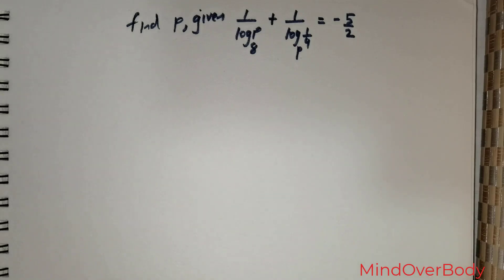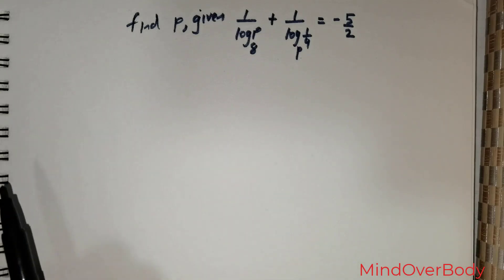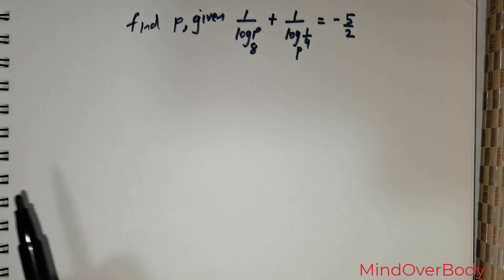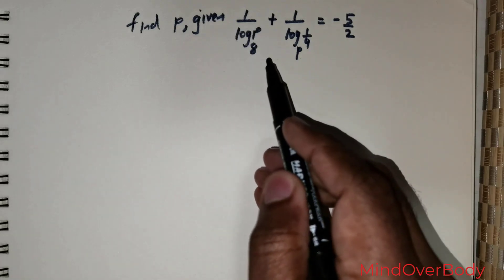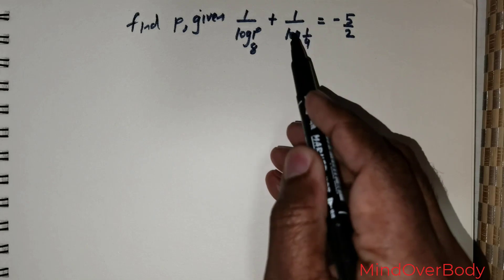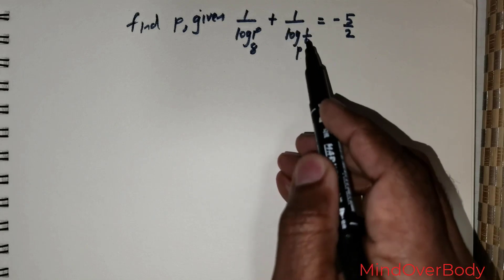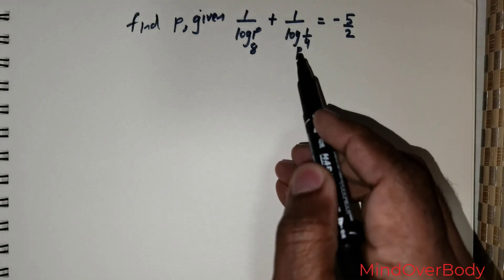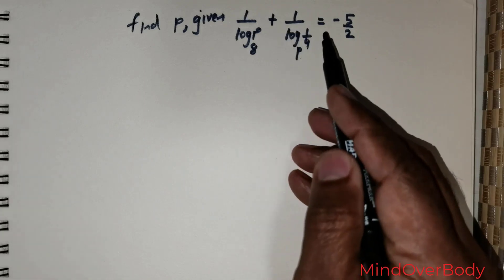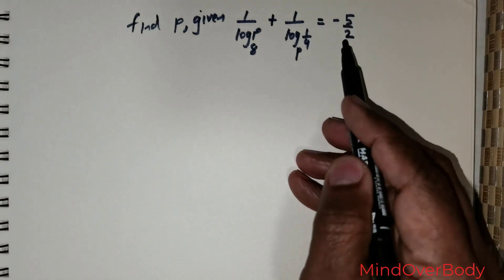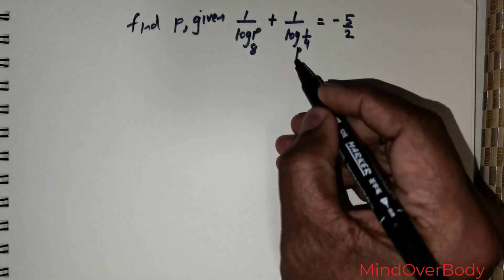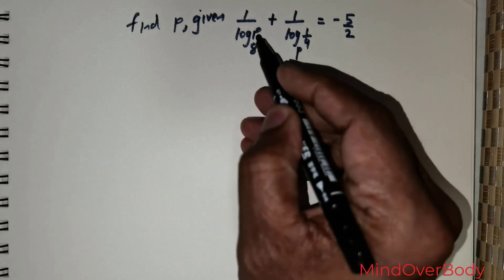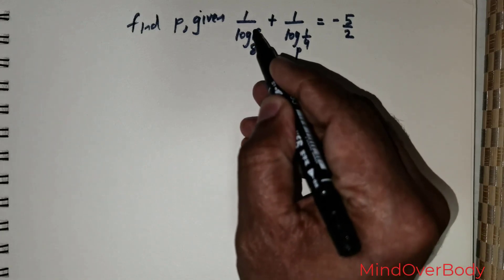Welcome students. We have been given this question: find the value of p such that 1 over log p to the base 8, plus 1 over log of 1 over 4 to the base p, is equal to negative 5 over 2. We have a base p here and a p present with the base 8.